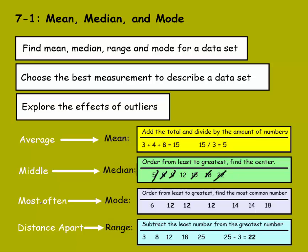Mode stands for most often. So in a set of numbers, you're going to try to find the number that repeats itself the most. So in this set of numbers, I have 6, 12, 12, 12, 14, 14, and 18. Well, I see that the 14 repeats twice, which is more than the 18 or the 6. But the 12 repeats 3 times, so therefore 12 would become our mode.